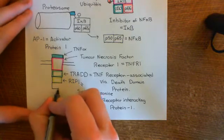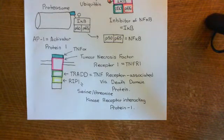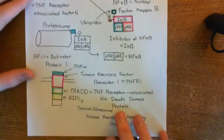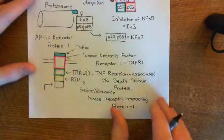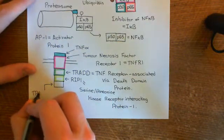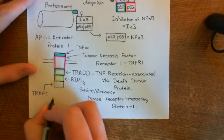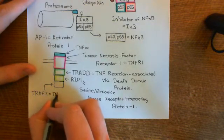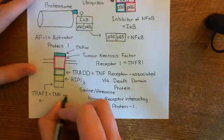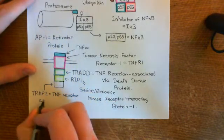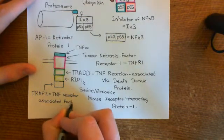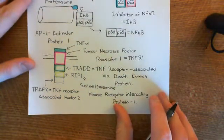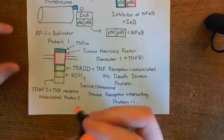The next protein is another TRAF protein — we've already seen TRAF6, which stands for tumor necrosis factor receptor associated factor 6. Now we're going to have TRAF2 specifically, which stands for tumor necrosis factor receptor associated factor 2. Once TRAF2 binds onto RIP1, it becomes active and does the exact same thing as TRAF6 did.